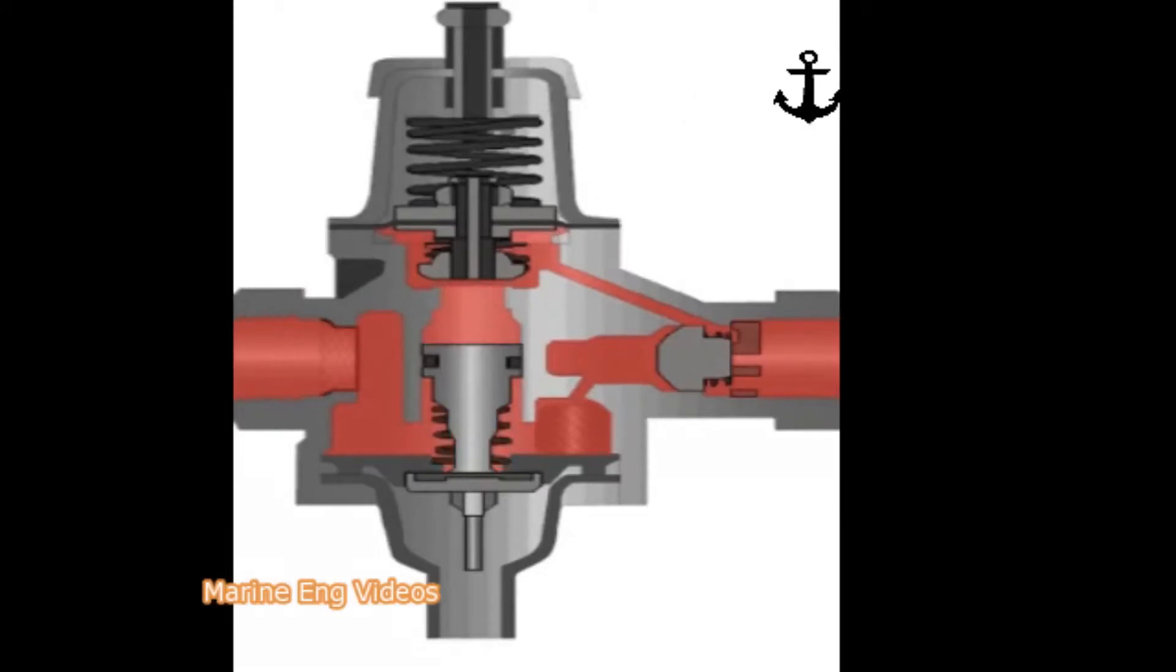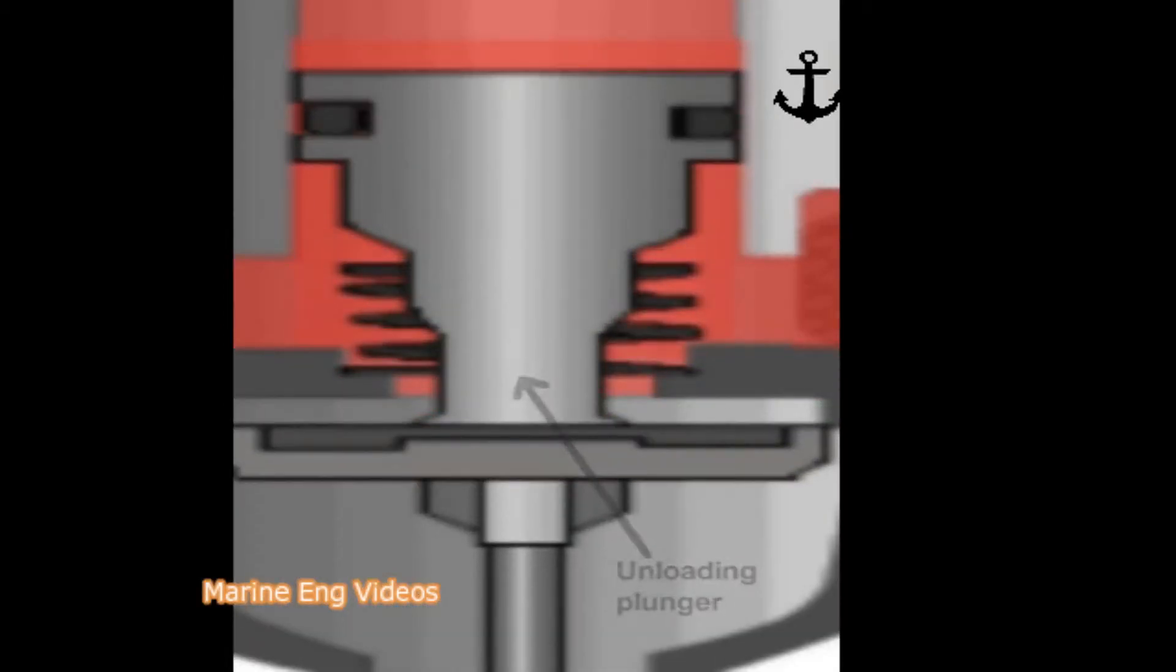the diaphragm lifts and the governor valve opens and admits air pressure above the unloading plunger. The unloading plunger moves down and the unloader valve opens and lets air into the atmosphere.